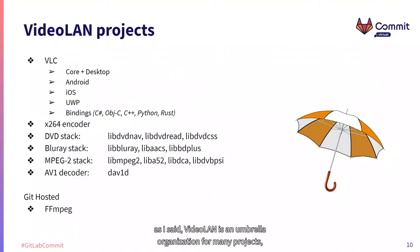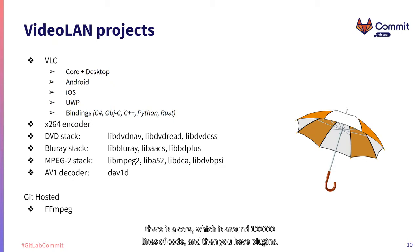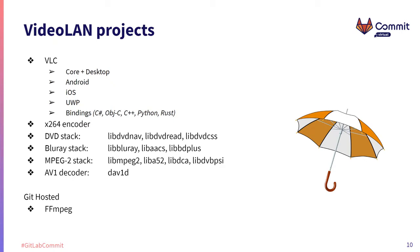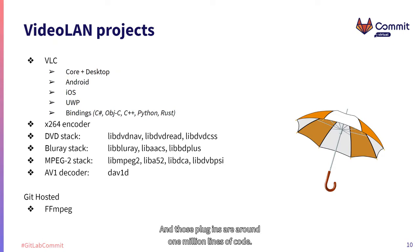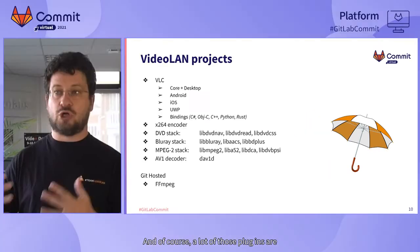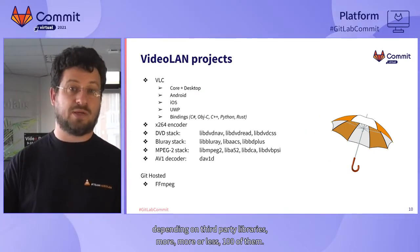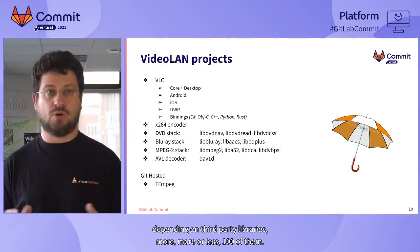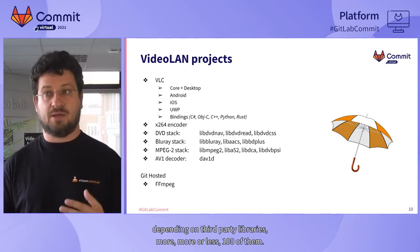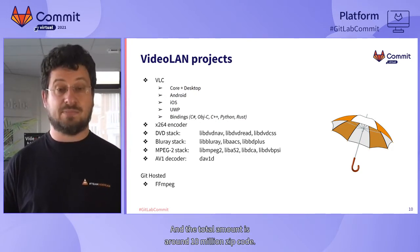Video LAN is an umbrella organization for many projects. The main VLC is a kind of mono repo where there is a core of around 100,000 lines of code, and then you have plugins — probably 500 to 600 plugins — which are around 1 million lines of code. Those plugins depend on around 100 third-party libraries. The total amount is around 10 million lines of code.